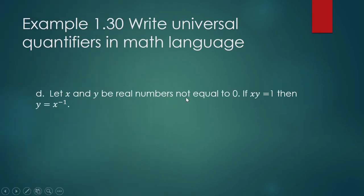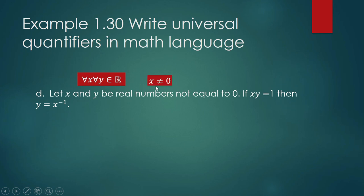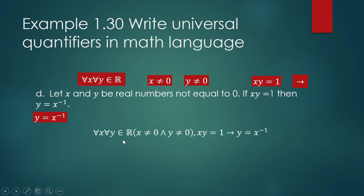Example (d): Let x and y be real numbers not equal to zero. If x times y is one, then y is equal to the multiplicative inverse of x. 'For any real number x and y not equal to zero' is a universal quantifier: x is not equal to zero and y is not equal to zero. 'If x times y equals one' uses the implication connective — this is a conditional statement. The full math sentence: for any real numbers x and y such that x is not zero and y is not zero, if x times y equals one, then y equals the multiplicative inverse of x.